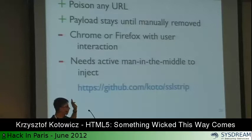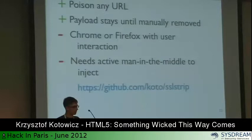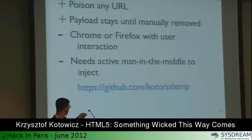With this technique we can poison any URL, as long as it's not SSL encrypted. The payload stays until manually removed by the user. If you clear the cache while browsing through a malicious access point, it's not enough — I can monitor traffic and re-inject the poison every second, repopulating the cache you just cleared. To be safe, clear the cache after disconnecting from the suspicious Wi-Fi access point. This technique requires an active man-in-the-middle to inject; you can try it with my fork of SSL strip that adds application cache tampering.